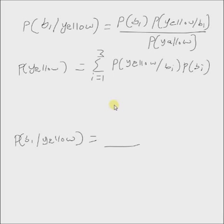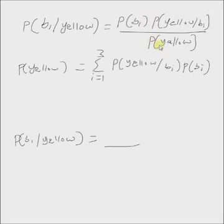We use Bayes' rule to find this posterior probability, which is defined as the ratio of the product of the prior probability and the likelihood probability divided by the evidence. The denominator — the probability of yellow from any basket — is found using the sum rule: the probability of yellow from each basket multiplied by the prior probabilities of the individual baskets.